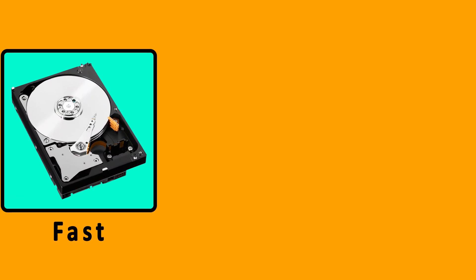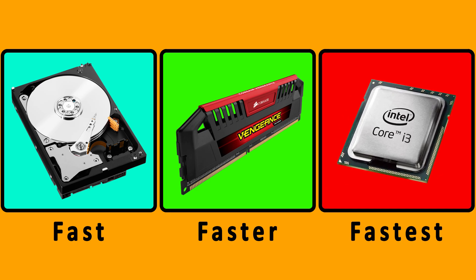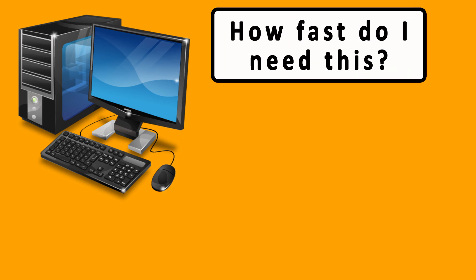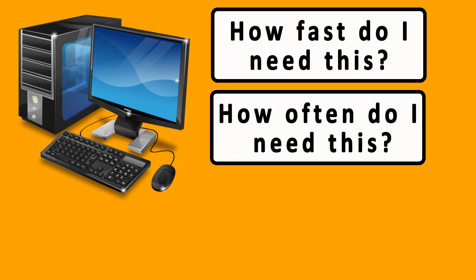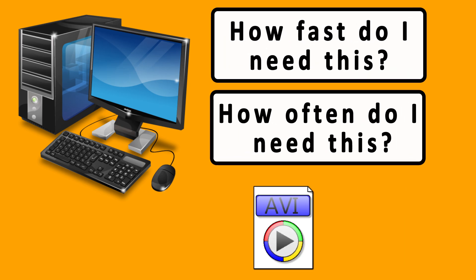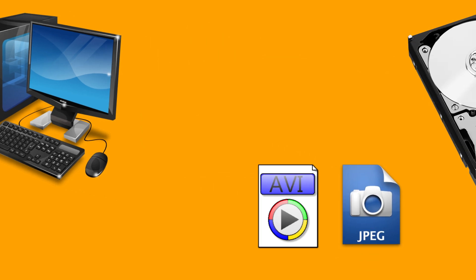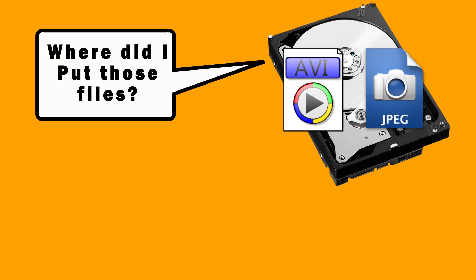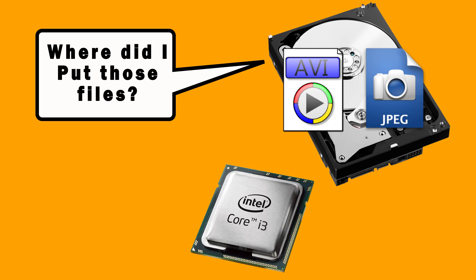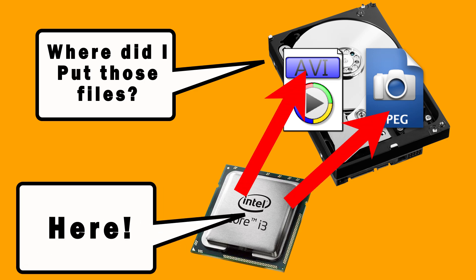A cache can be stored on the hard drive itself, in your RAM, or even in the CPU. Caches are made when your computer identifies information that needs to be accessed very quickly and very frequently — such as if you imported a video file into a video editing program or a photo into Photoshop. The data is still stored on your hard drive, but because your CPU has a cache knowing exactly where on the hard drive it is, it can be accessed and loaded into RAM very quickly.